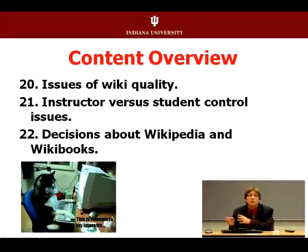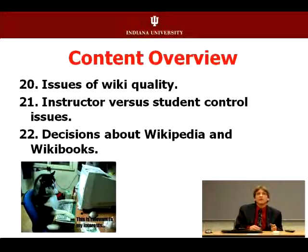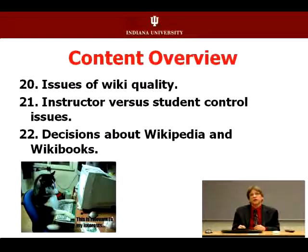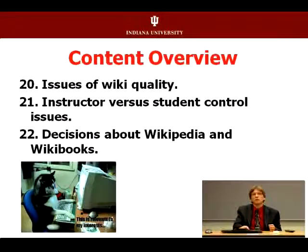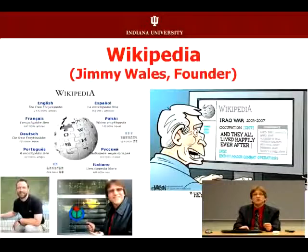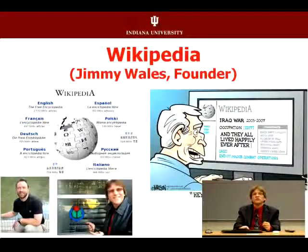Quality becomes a concern with crowdsourced content. You might not want students using Wikipedia, but you might let them use Encyclopedia Britannica or another peer-reviewed website. Wikibooks is typically not peer-reviewed, so think about those control and quality issues.